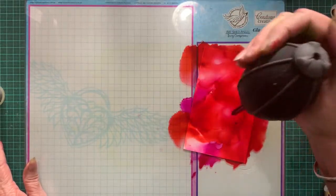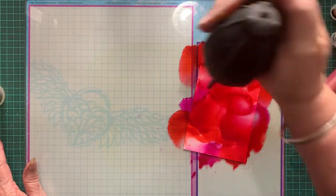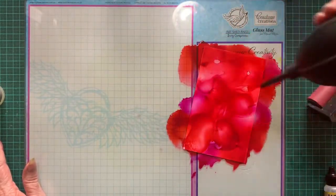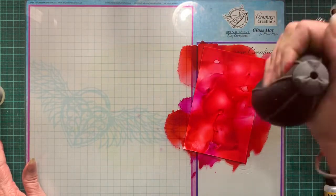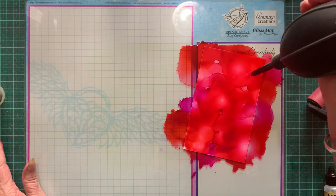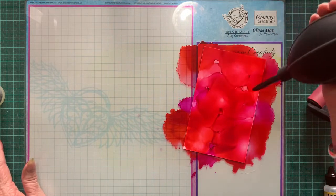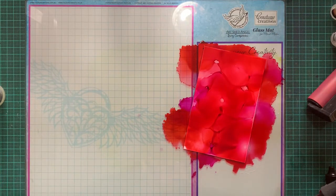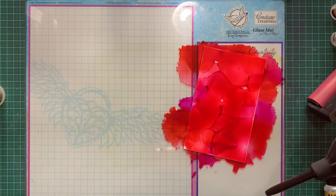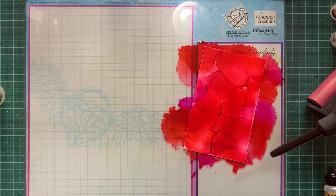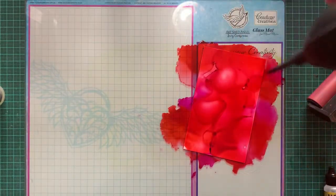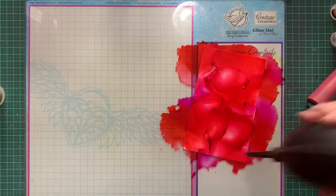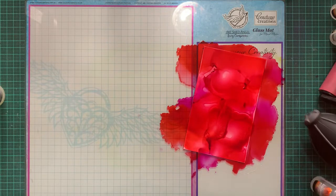When it comes to stamping, you need to use an ink like StazOn or I think it's VersaFine, like Onyx Black VersaFine ink, because you need something that's not going to wipe off. But it will take a while to dry.